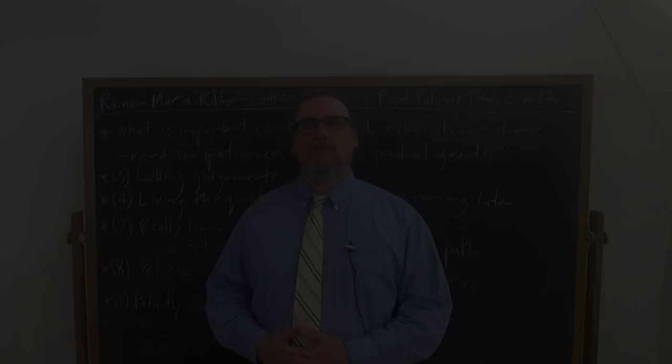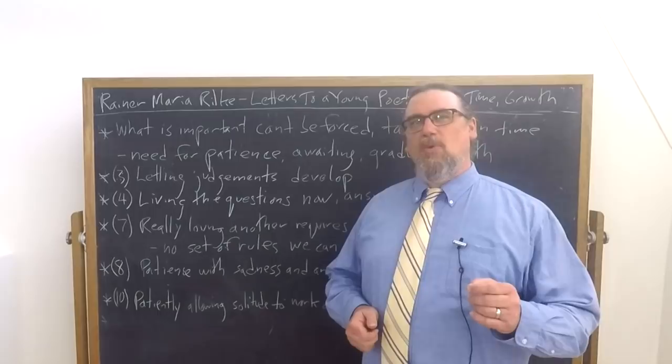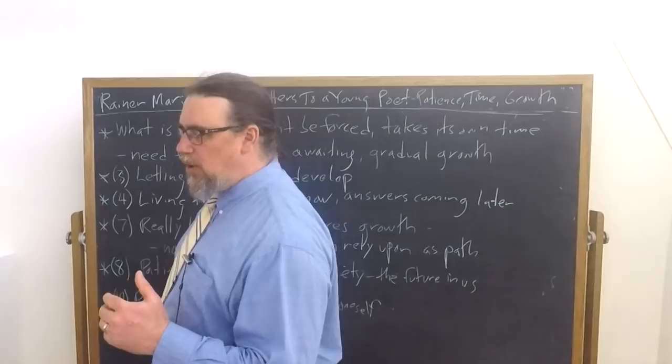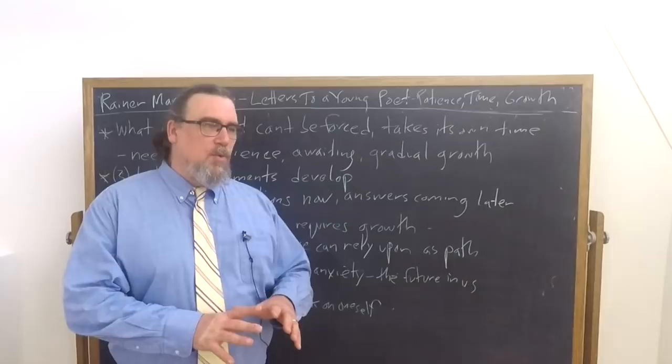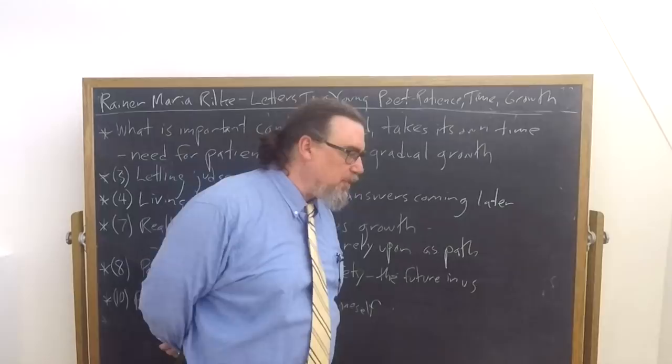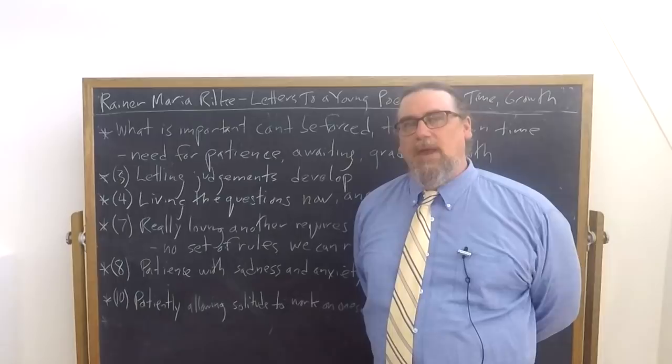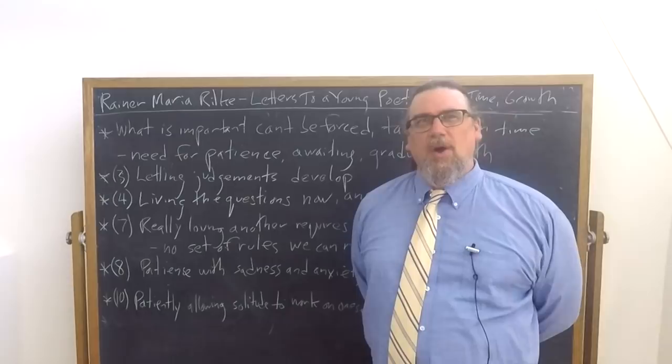One of the key themes that Rainer Maria Rilke stresses over and over again in his letters to a young poet is not something that is just applicable to younger people, those who are in childhood or adolescence, young adulthood. It really is for all of us. It spans the entire time of our lives up into the very end. And that is that we need to develop patience, that some things can in fact be forced or ordered or compelled to appear at this particular time.